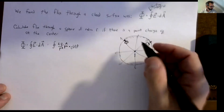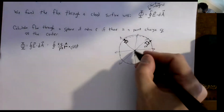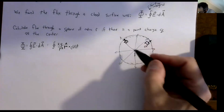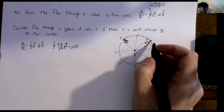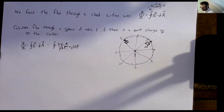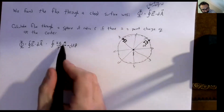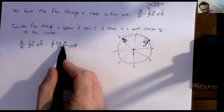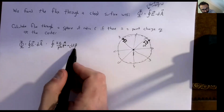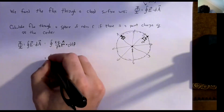So we can write our dA vector as just dA r̂ — the magnitude dA times the direction r̂. The electric field lines that pass out of the sphere are going to be parallel to the area vector at that point. The electric field lines are always going outward from the center symmetrically, and the area vector is always pointing outward as the perpendicular to the surface. So if we just look at the direction part, we have r̂ dot r̂, and the dot product of two identical unit vectors is just one.